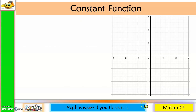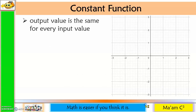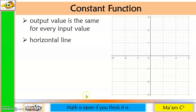The first one is the constant function. In a constant function, the output value is the same for every input value, thus it produces a horizontal line. The parent function for this is f(x) = a, where a is any constant.